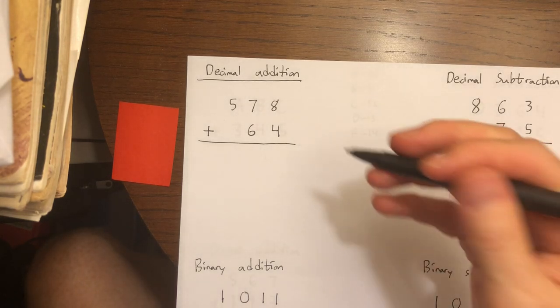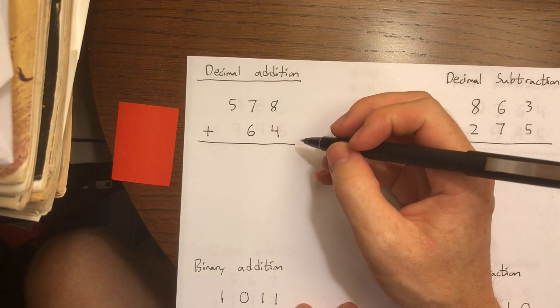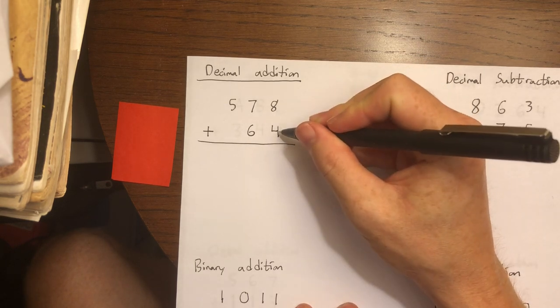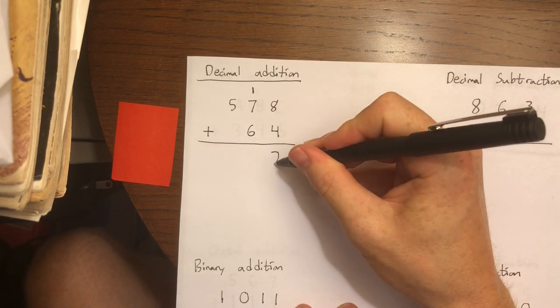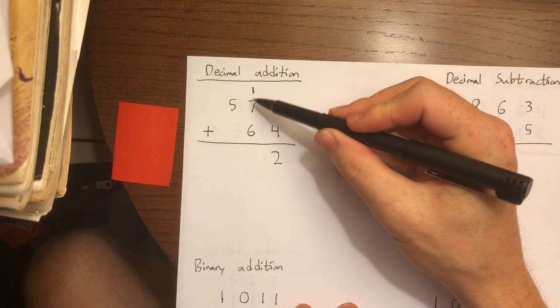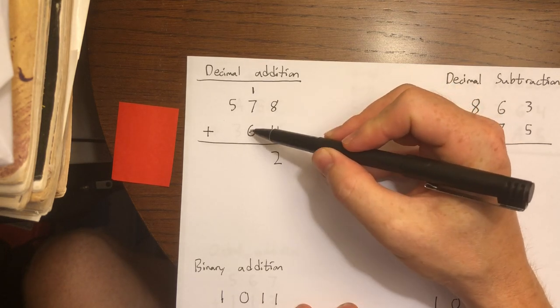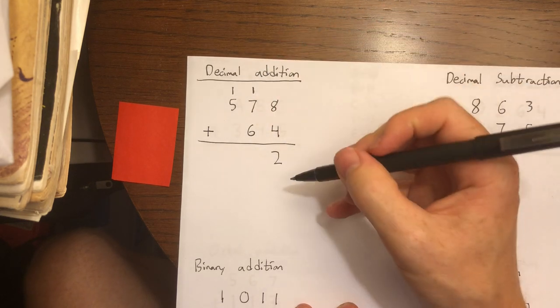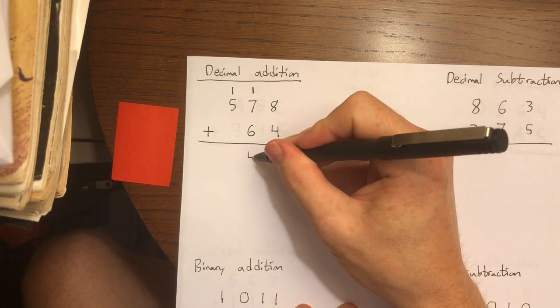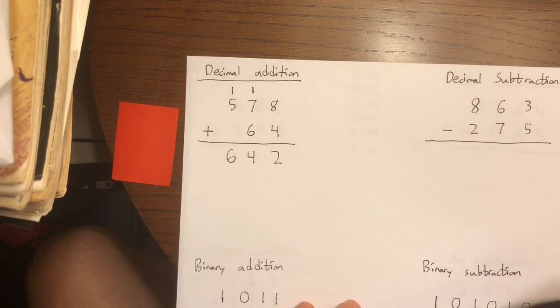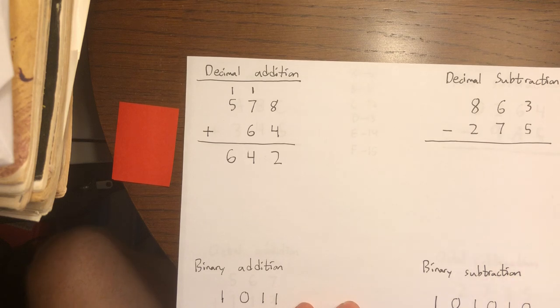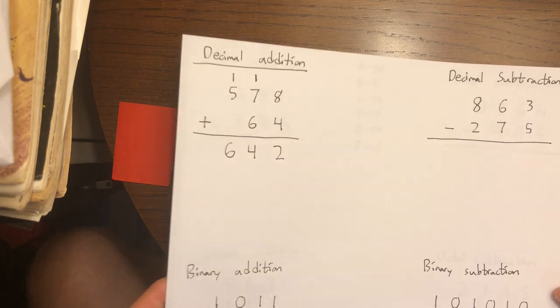So first, decimal addition. This is what we know from elementary school. 8 plus 4 gives me 12. The base is 10, so I can carry 10 out to the next column, which leaves me with 2 down below. And then in this column I have 1 plus 7 is 8, plus 6 is 14. I carry 10 out to the next column and 4 is left here, and then 1 plus 5 gives me 6. Pretty basic, but this is the foundation for how all other additions work, so it's nice to have that decimal foundation.